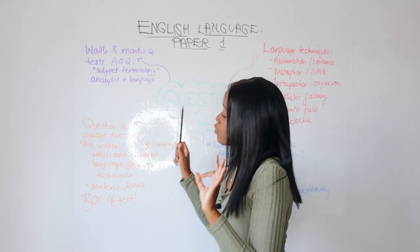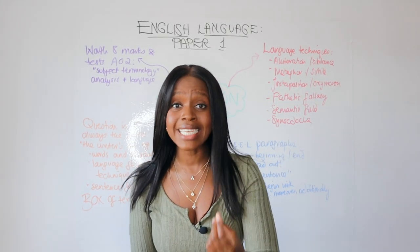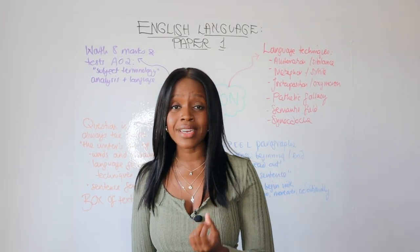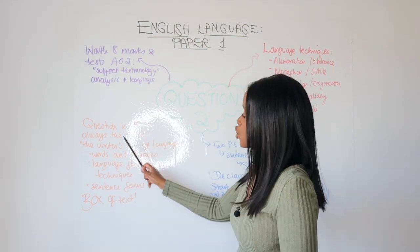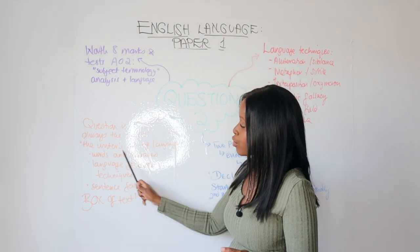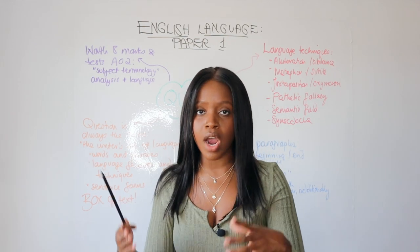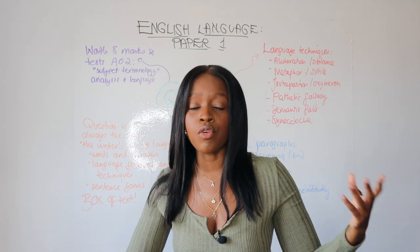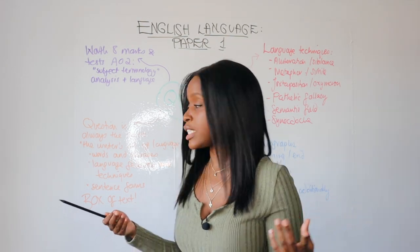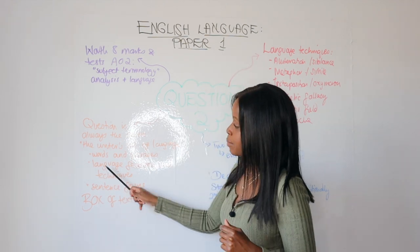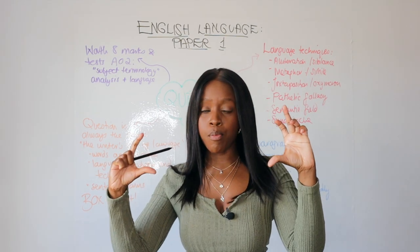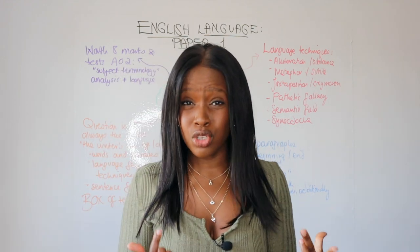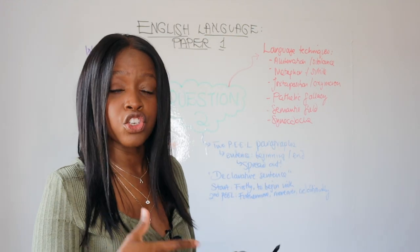Step number two, always remember and always even anticipate that the question will be worded in exactly the same way. The question will always ask you to talk about and to comment on the writer's use of language to describe blah, blah, blah, depending on the text and the fiction texts that you're presented with. And the bullet points are always the same. You're asked to talk about words and phrases, language features and techniques and sentence forms. And then you get a box of texts. So that's step number two, just know what to anticipate for this question and how it's laid out.